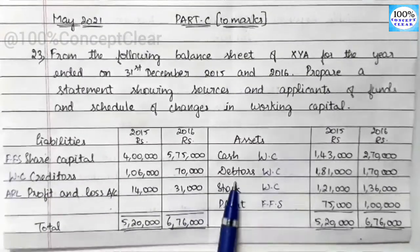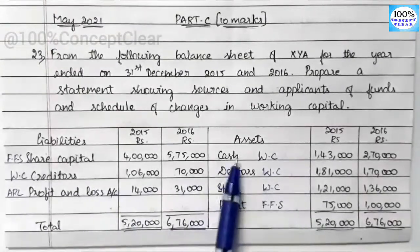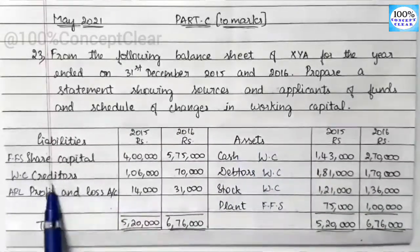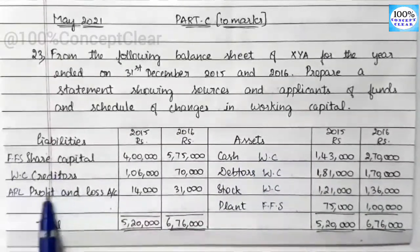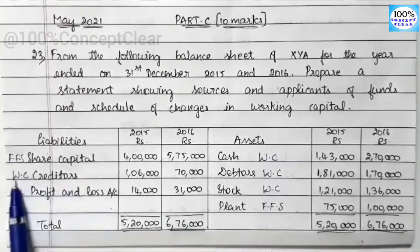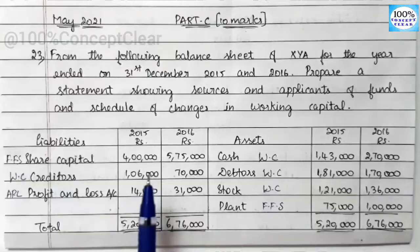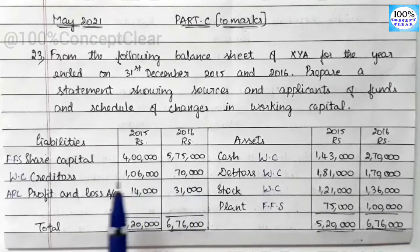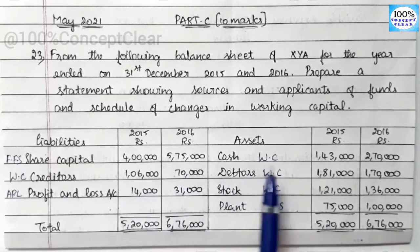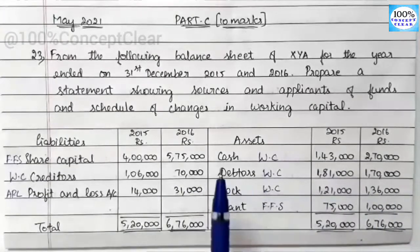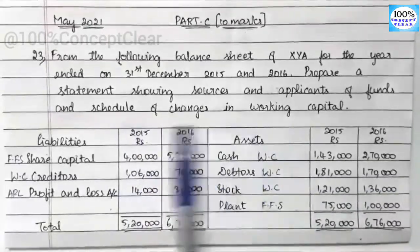Cash, debtors, and stock are the current assets — these form the working capital. Creditors are the current liabilities, also part of working capital. There are three steps in the fund flow statement: the first is the statement of changes in working capital, the second is the adjusted profit and loss account, and the third is the fund flow statement.